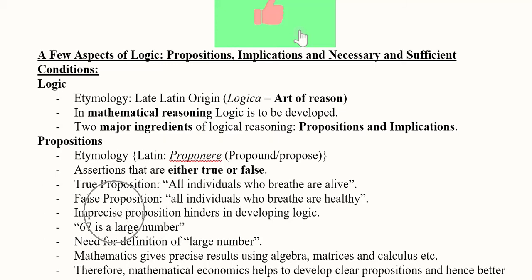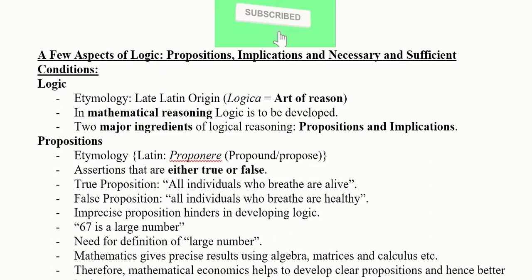In addition to true and false propositions, there can be imprecise propositions, which become a hindrance in developing logic. For example, if I say '67 is a large number,' I must define what a large number is. If I define a large number as having seven digits, then 67 is not a large number — so I must explain my terms beside any such proposition.